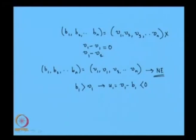For other players, they are currently getting 0 payoff. If they want to get the object, they will have to outbid player 1. But if they outbid player 1, the price they quote will be more than V1, which exceeds their individual valuations, resulting in a negative payoff. If they do not get the object, their payoff remains 0 regardless of what they bid. So deviation is not profitable for other players either, and hence this is a Nash equilibrium.